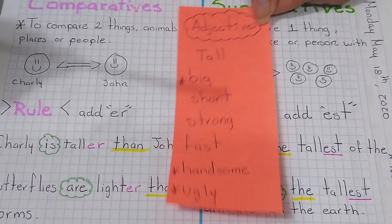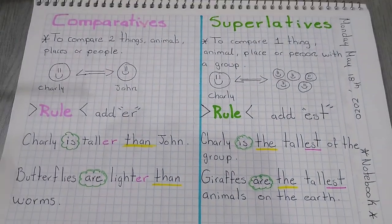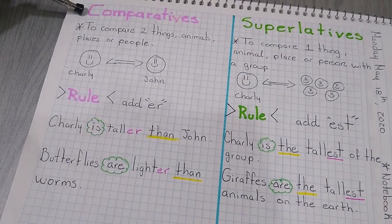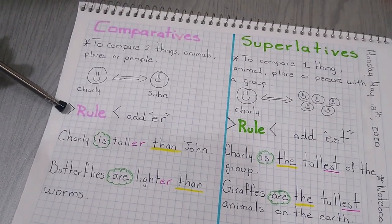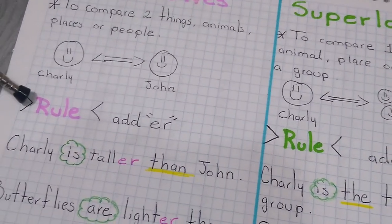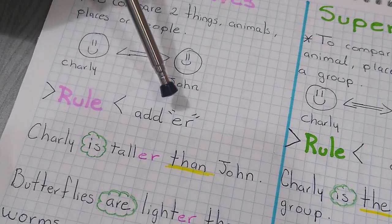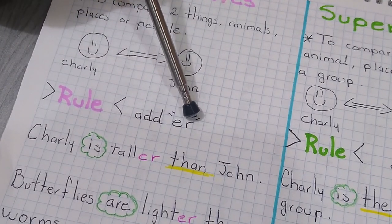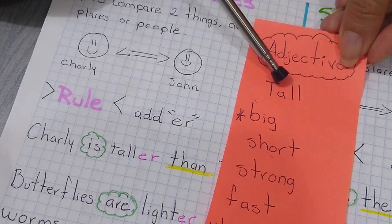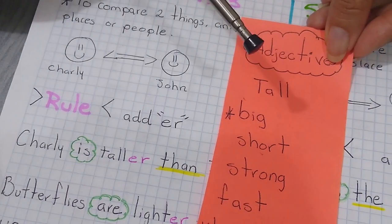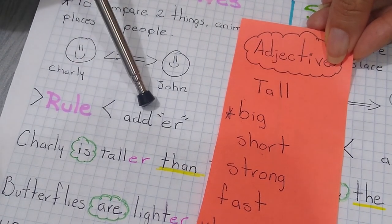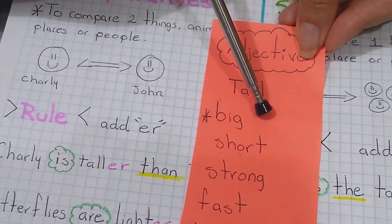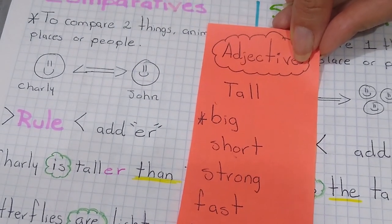Let's continue with the rules of comparatives. The rule of the comparatives says you are going to add -er to the adjectives. You are going to add -er at the end of the adjectives to make a comparison.